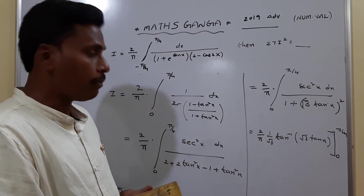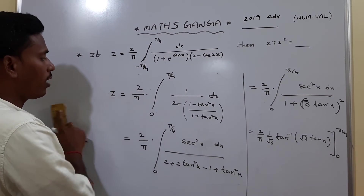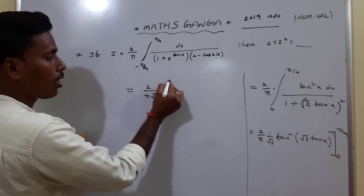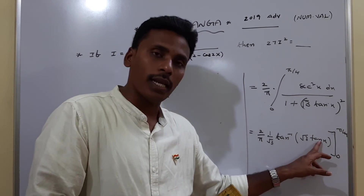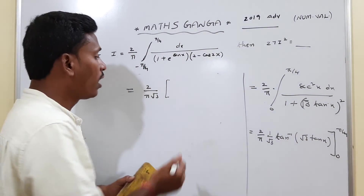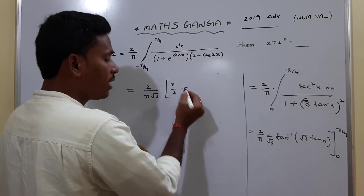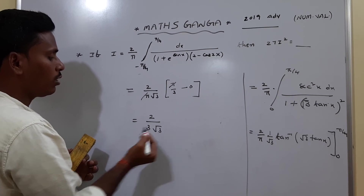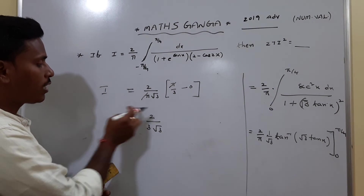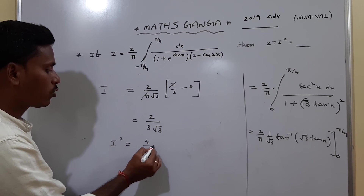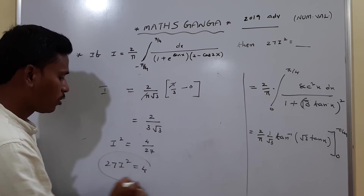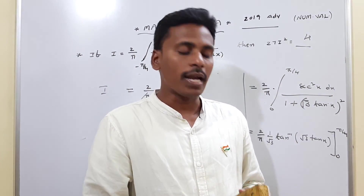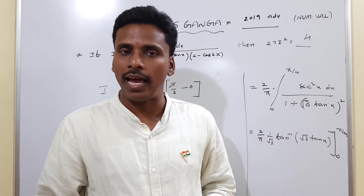Replacing the limits: at x = π/4, tan(π/4) = 1, so √3 times 1 = √3, and tan inverse(√3) = π/3. At x = 0, tan inverse(0) = 0. The π values cancel, giving I = 2 by 3√3. Therefore I² = 4 by 27, and finally 27I² = 4. The answer is 4. This is a nice question from calculus; regular practice makes it quicker.